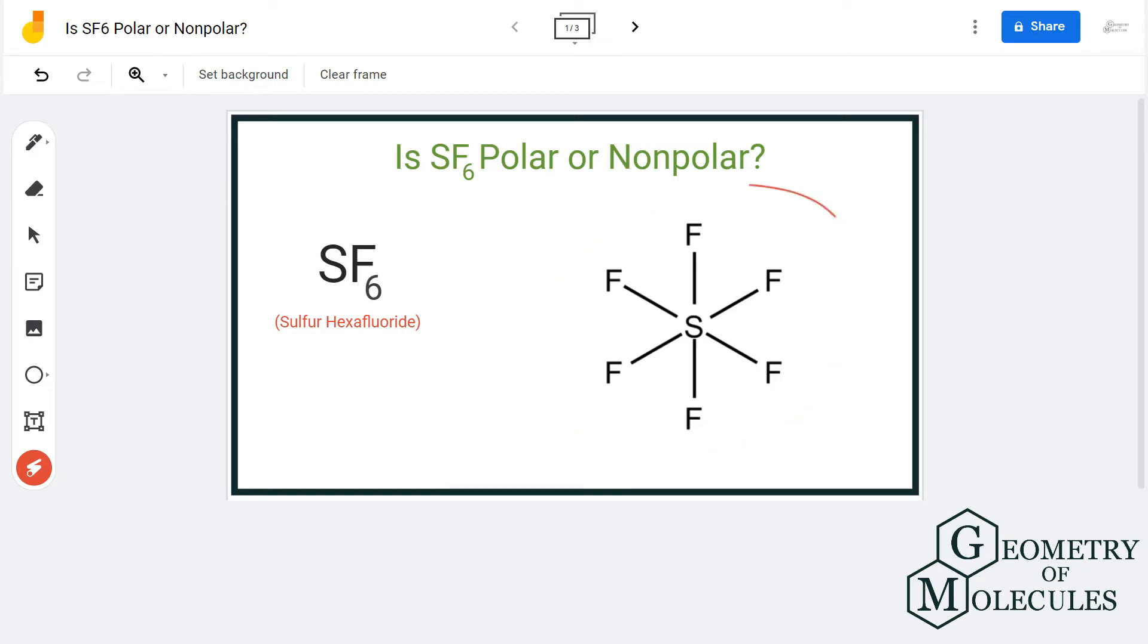Here is the Lewis structure of SF6 molecule, in which one atom of sulfur is forming single bonds with six fluorine atoms. The polarity is determined by the net dipole moment in the molecule, so here all the fluorine atoms